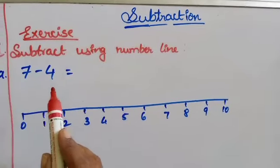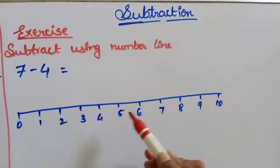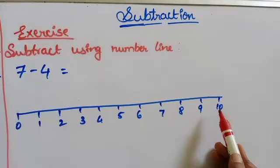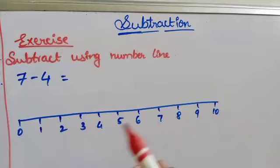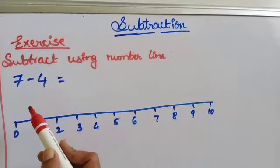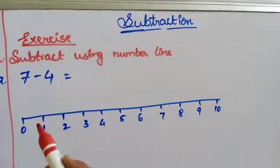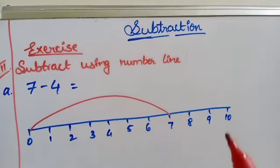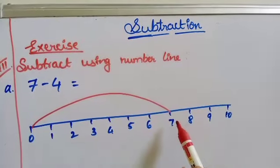The first one is 7 minus 4. We have to find out the answer by using the number line. So we have to draw a straight line with the help of a scale and write the numbers from 0 to 10 with the same measurement. The first number is 7, so from 0 we have to jump directly to 7.